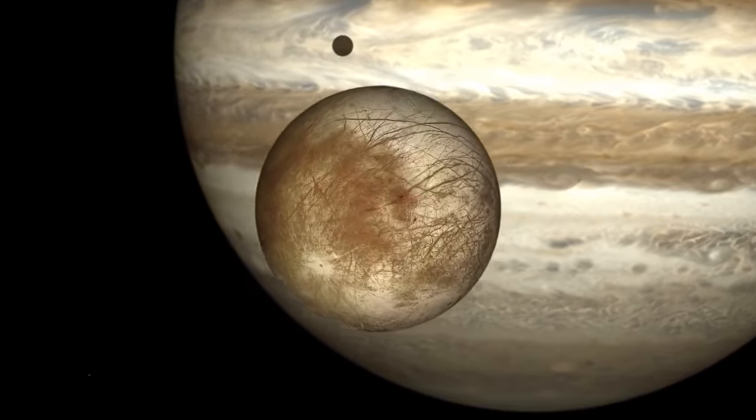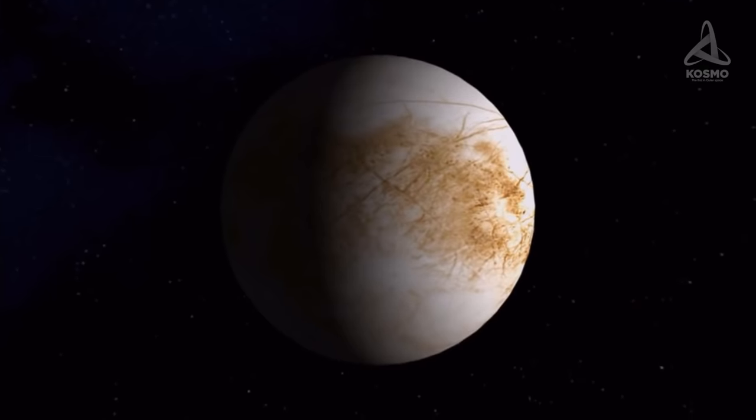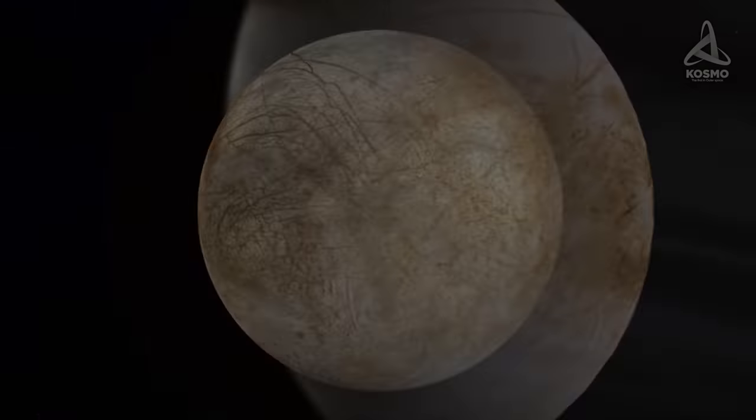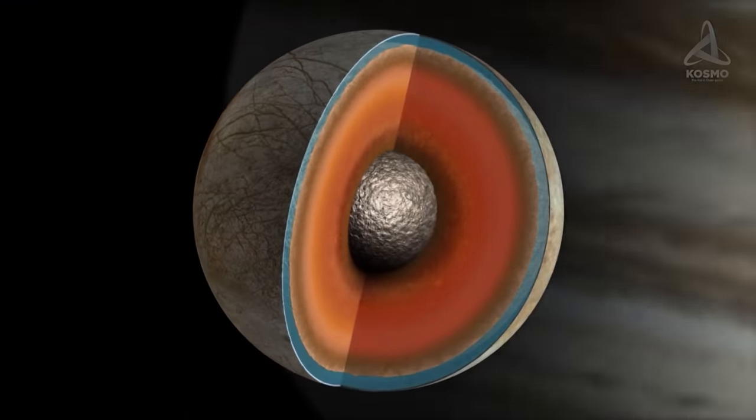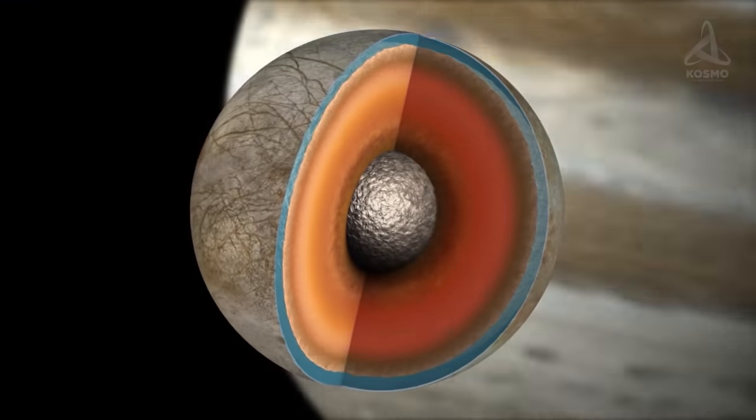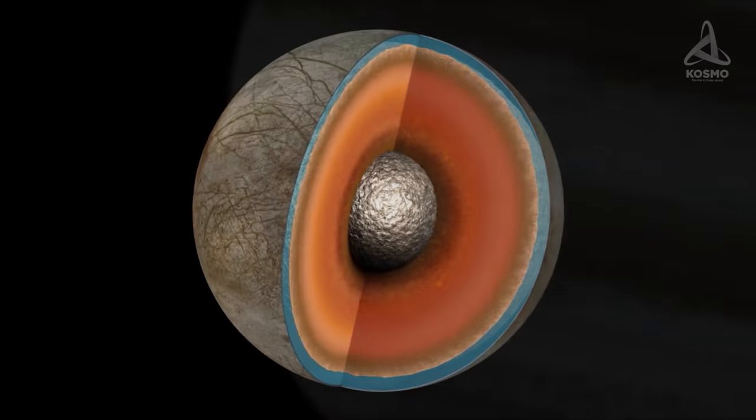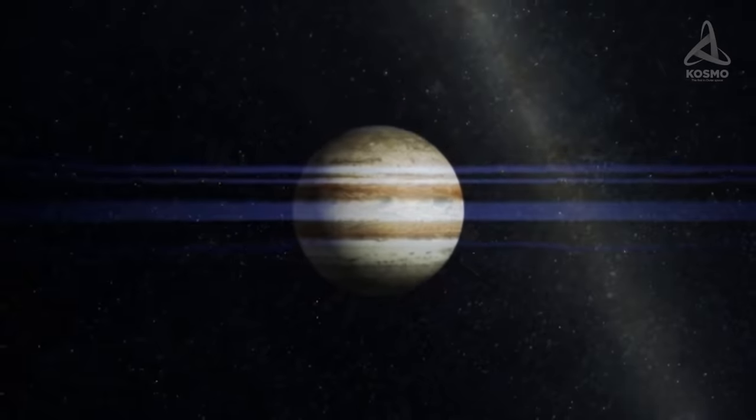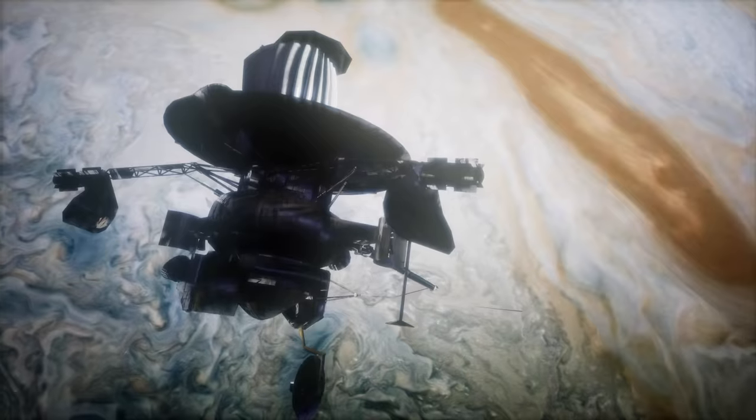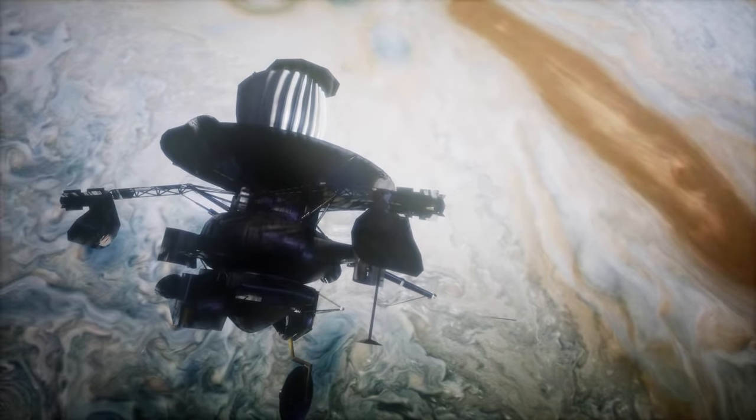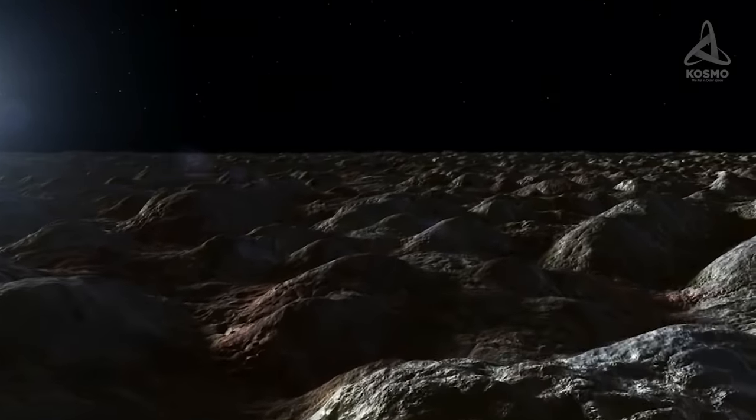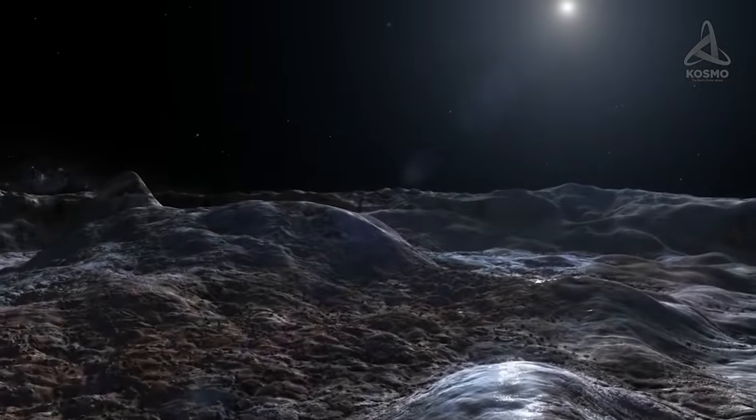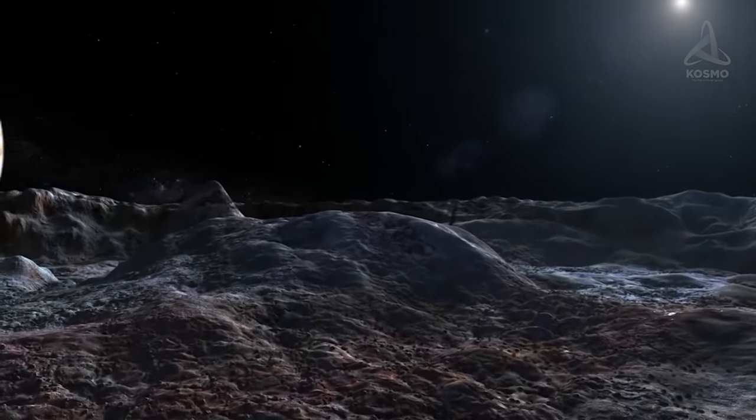Europa is tidally locked to Jupiter, facing it with the same side only. However, its rotation isn't synchronized ideally, there are deviations from the calculated trajectory. This may mean that there is a liquid layer between Europa's surface and core. This assumption is confirmed by observation of interaction between the satellite and Jupiter's magnetic field carried out by the Galileo space probe in the late 20th century. Apart from that, analysis of crevices Europa's surface is covered with shows that the satellite's crust moved 80 degrees with respect to the interior.